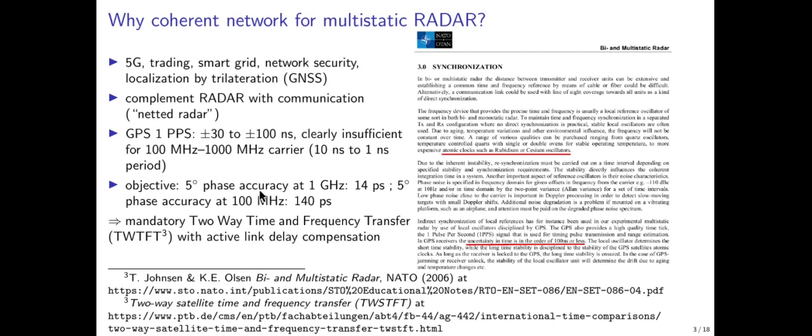If we want 5 degrees of angular phase resolution: at 1 GHz, where one period is 1 nanosecond (360°), 5-degree resolution requires 14 picosecond timing accuracy. At 100 MHz, that is a more reasonable 140 picoseconds, but still sub-nanosecond. Remember that light propagates at 300 meters per microsecond, so even a few tens of centimeters of separation between receivers creates synchronization challenges. We absolutely need two-way time and frequency transfer with active compensation.